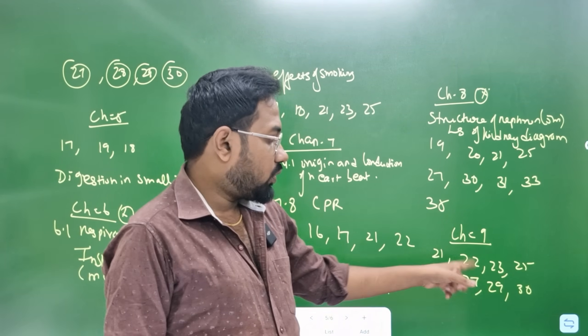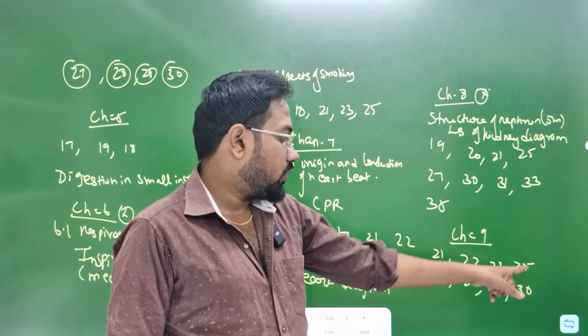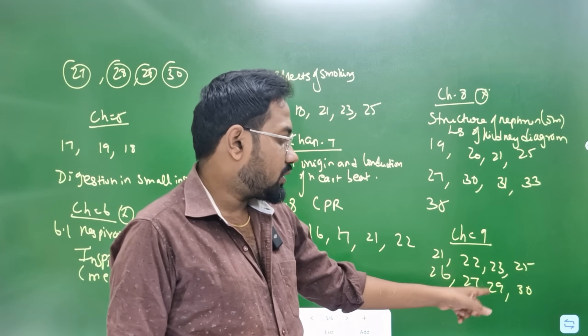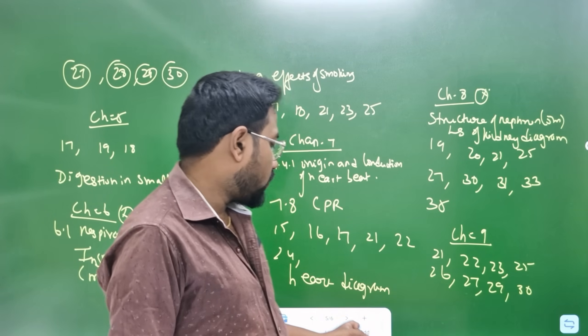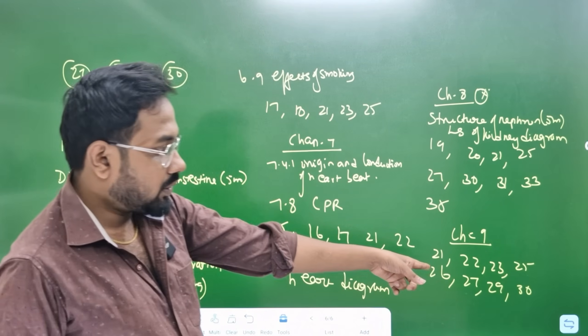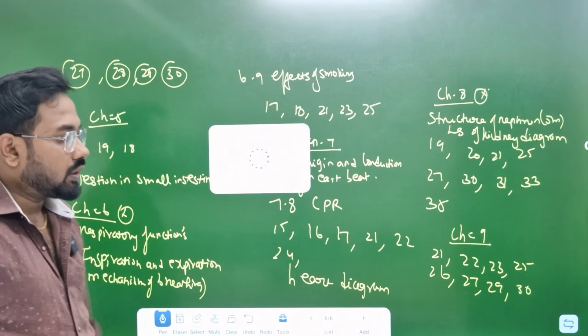Chapter 9 — sections 21, 22, 23, 25, 26, 27, 29, 30 — 2 marks, 3 marks.